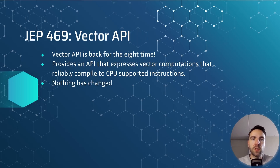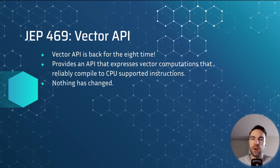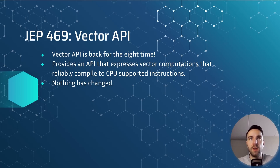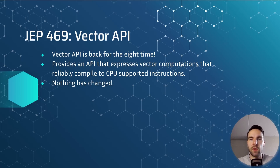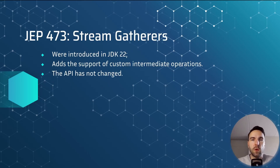With JEP 469, the Vector API is back again. It is an API that expresses vector computations that reliably compile at runtime to CPU-supported vector instructions. This is the eighth time the Vector API is shipped with the JDK and it has no changes from the previous release.